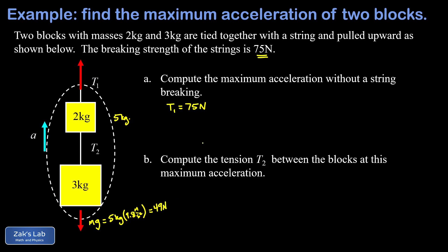We also recall that T1 is right at its limit of how big it can be before the string breaks - that's 75 newtons - and then the unknown here is the acceleration. So we apply Newton's second law to this thing: that's F net equals ma.